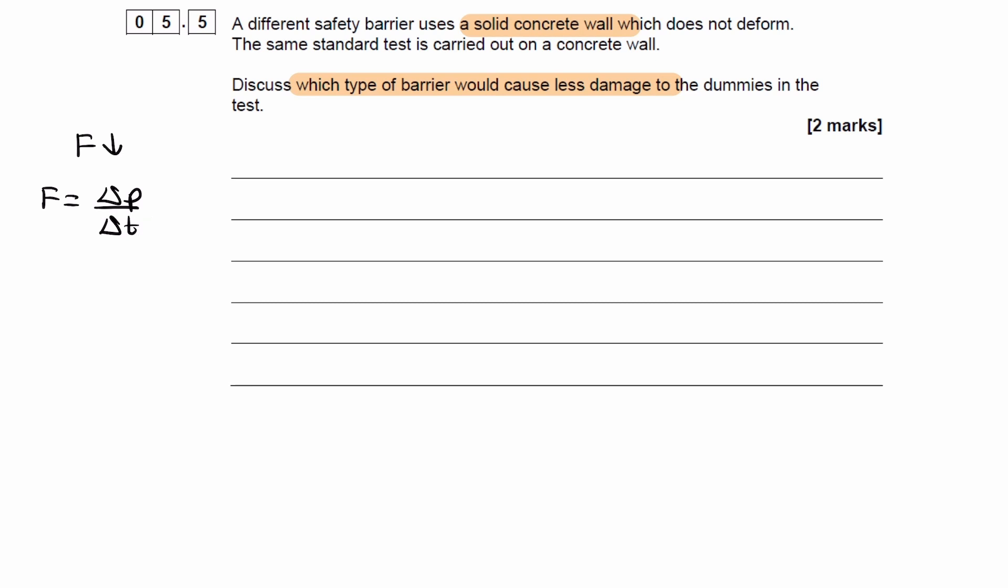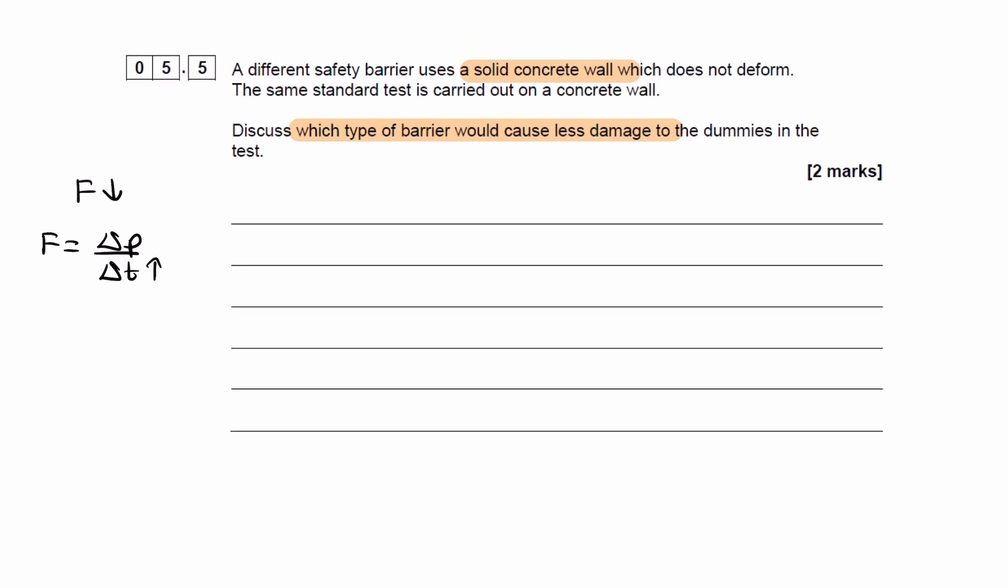For a solid concrete wall, as you could probably imagine, the time of collision will be very short. If you were to have a steel barrier which deforms 1.5 meters, the time of collision is extended. If the time of collision is extended for the steel barrier, if delta T is bigger, that means the force will go down.